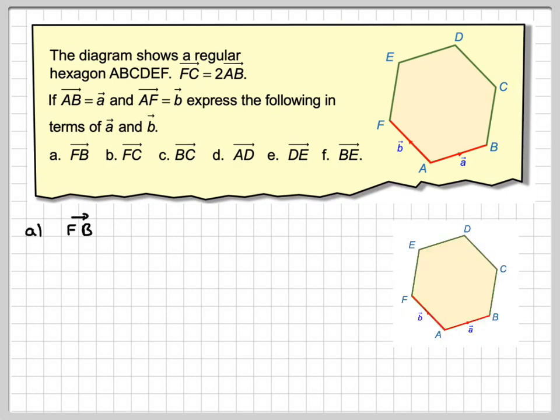Okay, so using the diagram here, we want to find vector FB. Let's just put two arrows on it to show that it's the resultant that we're trying to find. So FB is the same as going FA plus AB. It's very important to write this bit out first. Now we're going against the arrow here in B, so therefore that will be minus b plus a. You could leave it like that, but generally that would be written as vector a minus vector b.